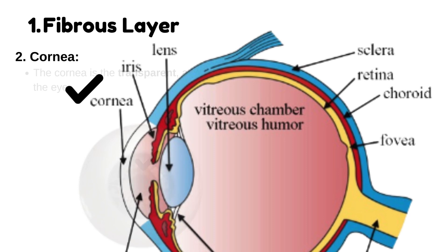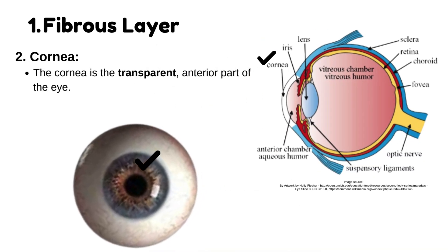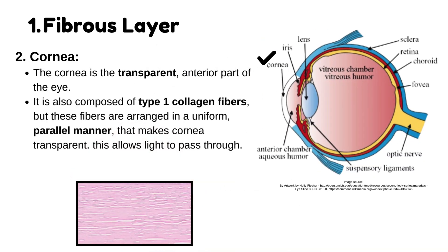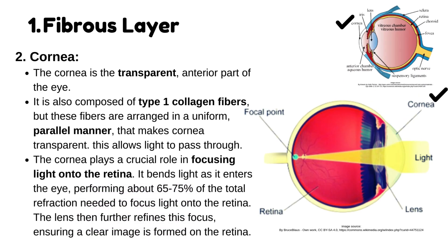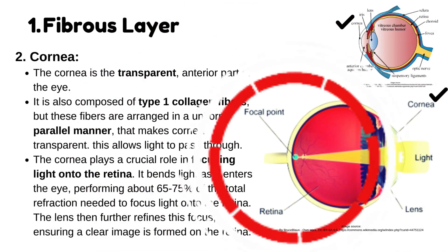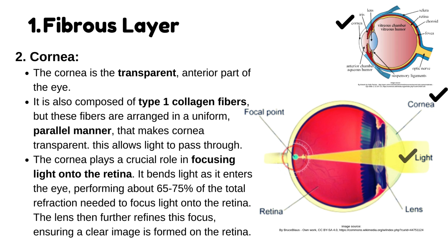The cornea is the transparent, anterior part of the eye. It is also composed of type 1 collagen fibers, but these fibers are arranged in a uniform, parallel manner that makes the cornea transparent, allowing light to pass through. The cornea plays a crucial role in focusing light onto the retina, performing about 65–75% of the total refraction needed. The lens then further refines this focus, ensuring a clear image is formed on the retina.